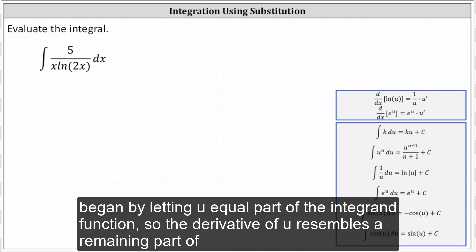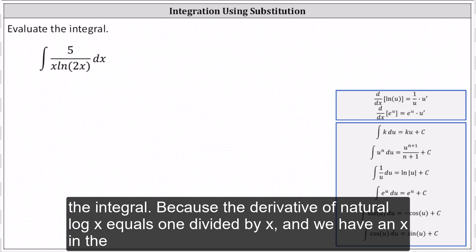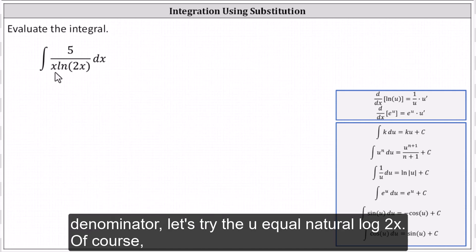We begin by letting u equal part of the integrand function, so the derivative of u resembles the remaining part of the integral. Because the derivative of natural log x equals one divided by x, and we have an x in the denominator, let's try letting u equal natural log 2x.